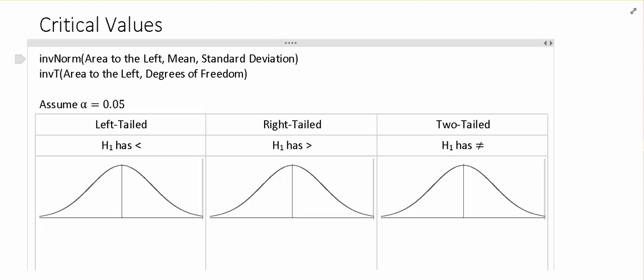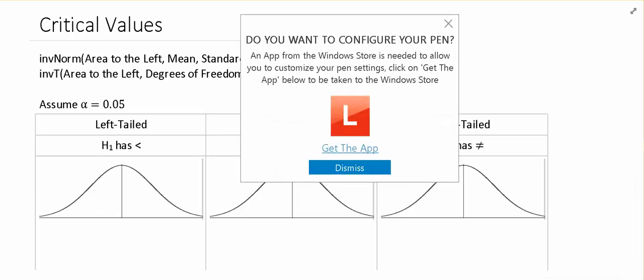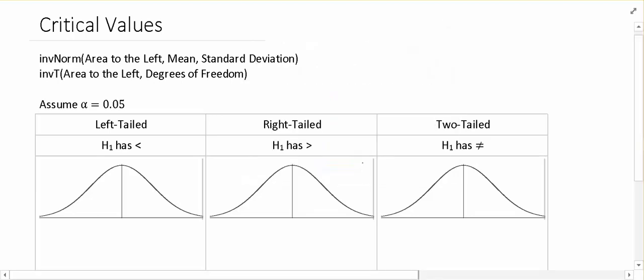All right, we're going to take a minute to talk about critical values. Critical values are going to be really important as we're making our way through hypothesis testing. Critical values are essentially the threshold between the values that we're going to consider unusual and those that are more usual.